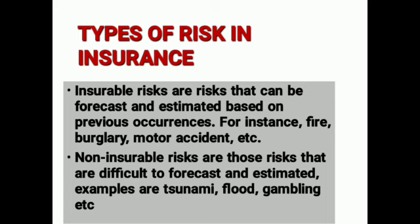The other type is non-insurable risks. These are risks that are difficult to forecast and estimate. You cannot know when they will happen — they just happen. Nobody can tell when they are going to occur. Examples include tsunamis, floods, and other natural disasters.